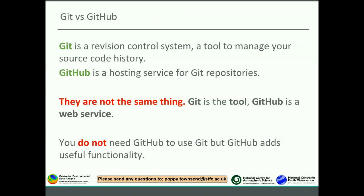Git is a revision control system, a tool to manage your source code history. Git is your command line interface that you'd use on your local machine, on your laptop or your desktop. GitHub is the web hosting service where you can put Git repositories. So they are not the same thing — Git is the tool, GitHub is a web service. As already mentioned, you can use them independently. You do not need GitHub to use Git, but GitHub adds lots of useful functionality on top.